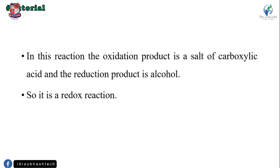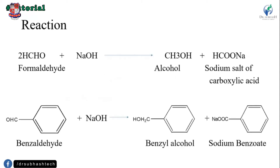The oxidation product is the salt of the carboxylic acid, and the reduction product is alcohol, which is why it is known as a redox reaction. For example, two moles of formaldehyde reacted with NaOH give one primary alcohol and the sodium salt of the carboxylic acid. In the aromatic example, benzaldehyde reacts with NaOH to give benzyl alcohol and sodium benzoate, which is an aromatic salt of the carboxylic acid.